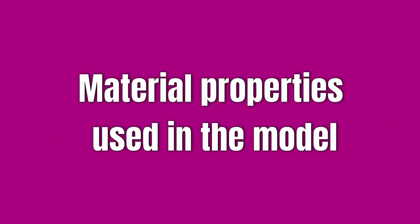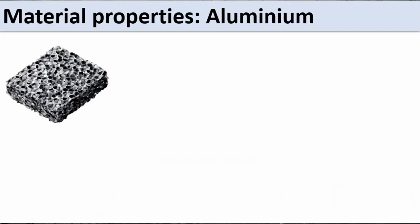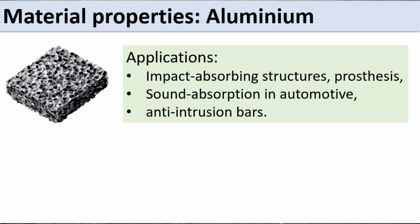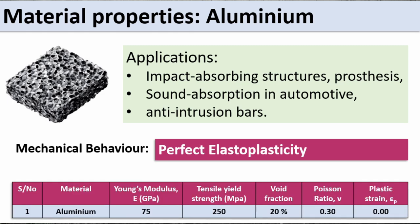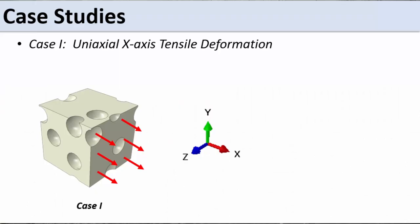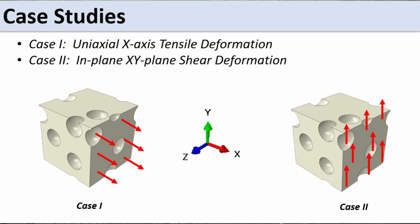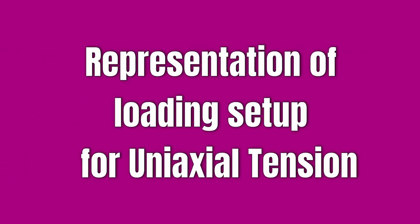The material properties we'll use for modeling are aluminium — specifically the kind used in impact-absorbing structures. The material behavior is a perfectly elastoplastic model. Case studies include uniaxial tensile deformation for the in-plane properties, and the XY shear plane deformation.